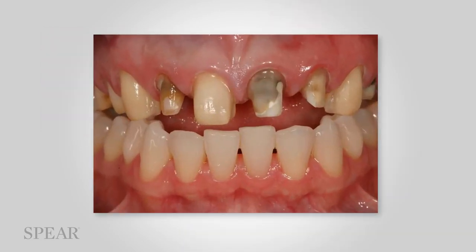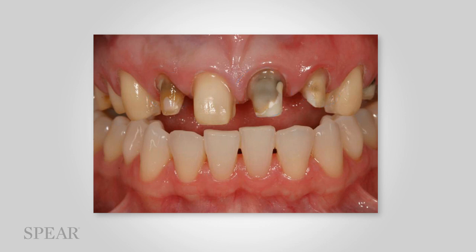Once you see the tooth preparation, we realize we have to vary our preparation based on discoloration. I may need to change the restorative material to mask severe discoloration, whereas on teeth that are veneered, I may be able to use more translucent materials.